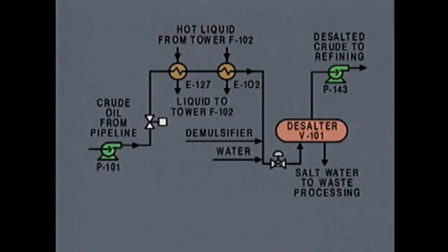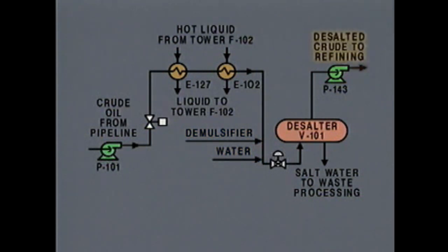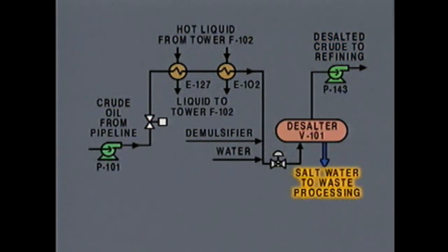The diagram also shows that the system has two other inputs: a chemical called a demulsifier and water. The major output of the system is desalted crude, and the diagram shows that it's fed to a refining system. There's also a line on the diagram labeled 'salt water to waste processing,' which represents the output stream containing the salt and other impurities that are removed from the crude.